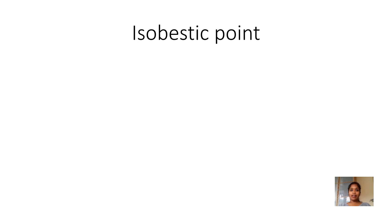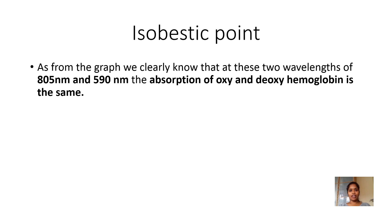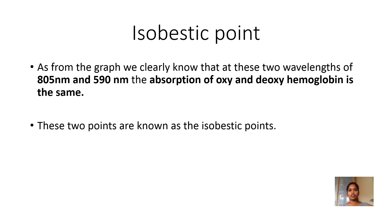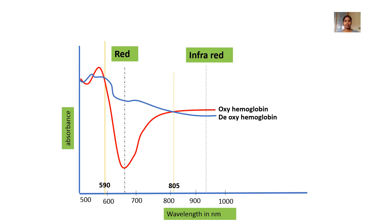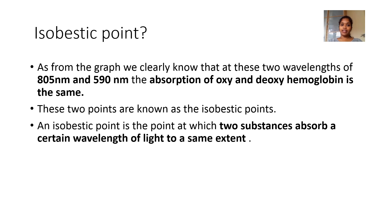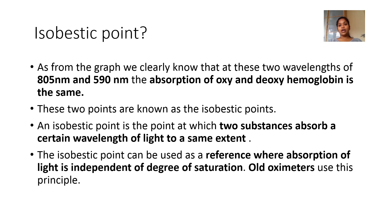What is an isobestic point? From the graph, we saw two wavelengths — 805 and 519 nanometers — where the absorption of oxyhemoglobin and deoxyhemoglobin is the same. These two points are known as isobestic points. At 519 nanometers, the absorbance is the same, and similarly at 805 nanometers the absorbance is the same. An isobestic point is the point at which two substances absorb a certain wavelength of light to the same extent. The isobestic point can be used as a reference where absorption of light is independent of the degree of saturation — because regardless of whether the hemoglobin is oxy or deoxy, the absorbance is the same. This principle was used in old pulse oximeters.